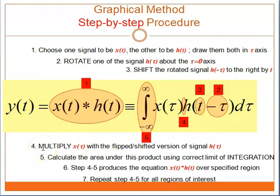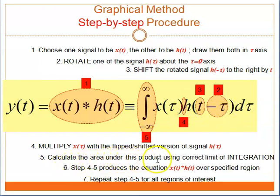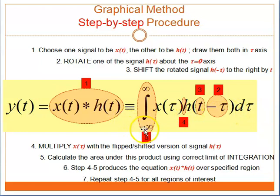Fourth step: multiply Xt with the flip-shifted version of signal Ht, so you will have Xt times Ht minus tau. And finally, calculate the area under this product using the correct limits of integration. You are going to integrate Xtau times Ht minus tau d-tau from minus infinity to infinity, depending on the correct limits of integration based on the given question.